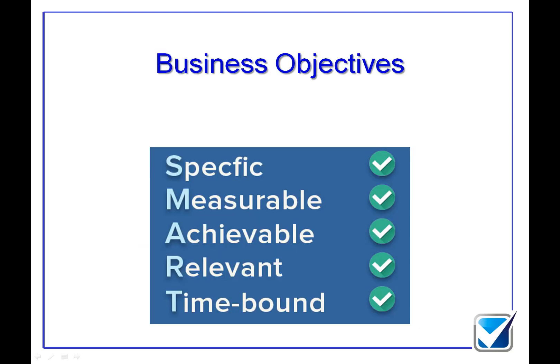You may have heard the mnemonic SMART. Every single business objective - and every type of objective - should meet this SMART mnemonic: Specific, so you know exactly what you need to do; Measurable, so you can determine whether you've done it or not; Achievable, meaning you think it's possible to do this thing; Relevant, so achieving this will help you achieve your longer-term objectives; and Time-bound, meaning there is a finite time period within which you should be hitting these objectives. Doing that then gives you good performance.